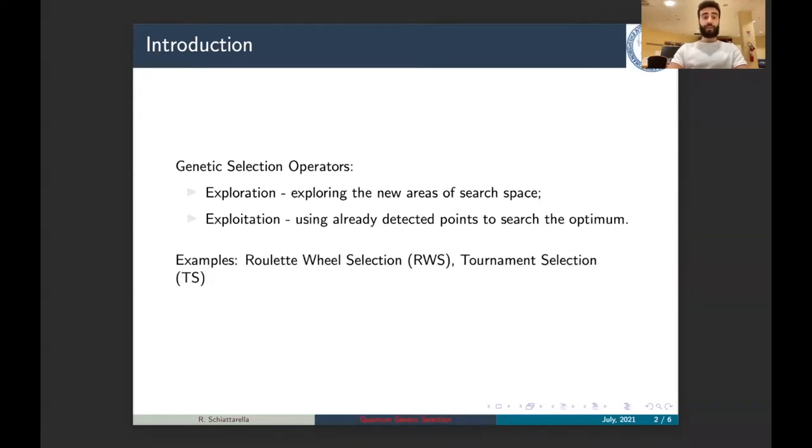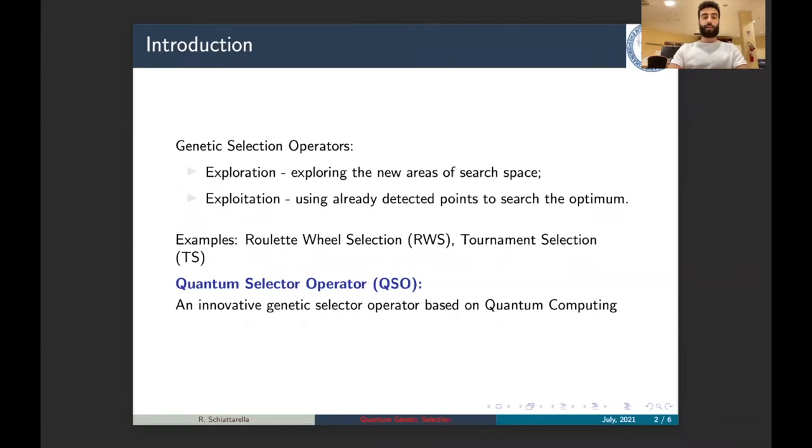You have the most used genetic selection operators, such as roulette wheel selection and tournament selection. In this work, we introduced a new genetic selection operator, namely quantum selector operator, that as you can understand from the name, it is based on quantum computing concepts.